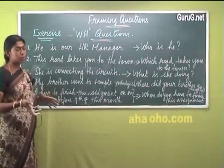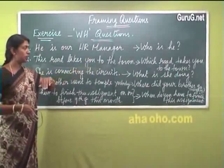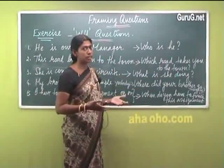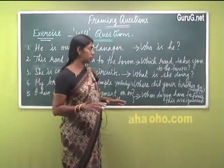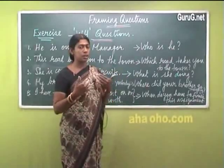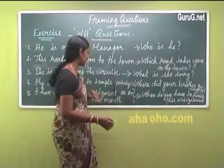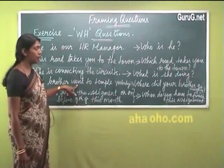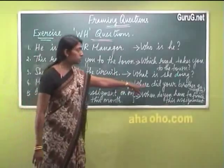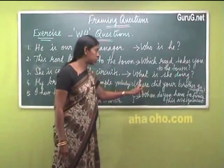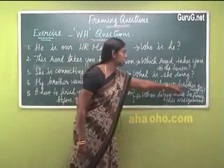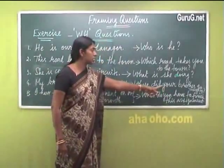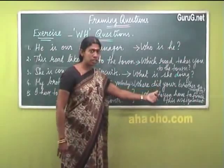'She is connecting the circuits' — the action is emphasized here. So you can frame the question: 'What is she doing?' It should not be 'What she is doing' — even though we sometimes speak that way, it is not the correct way to frame a question. The verb must come first, so 'What is she doing?' is correct. For 'My brother went to temple yesterday,' it is past tense. Did + go gives went, so the question is: 'Where did your brother go yesterday?'